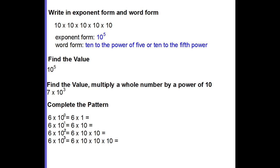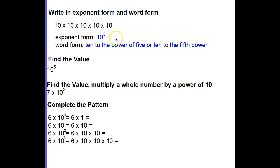Let's see how you did. Hopefully you were able to say that the exponent form of 10 times 10 times 10 times 10 times 10 is 10 to the fifth power, and the word form is '10 to the power of 5' or '10 to the fifth power.' Make sure you are careful when writing this as an exponent — your 5 needs to be small, smaller than the 10, so it doesn't look like 105.